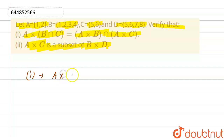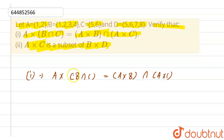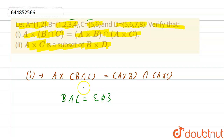For the first part, we need to find B∩C, A×B, and A×C. Let's find B∩C first. Looking at sets B and C, there is nothing common between them, so B∩C is the empty set (null set). If we multiply A with the empty set, A×(B∩C) is also equal to the empty set.